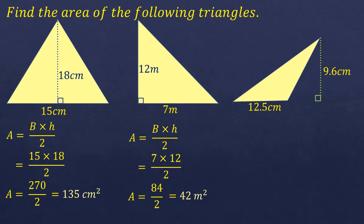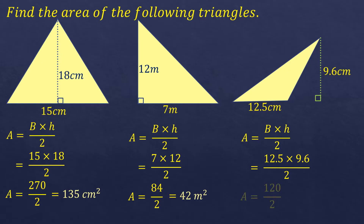Another triangle with a base of 12.5 centimeters and a height of 9.6 centimeters. Following the formula and substituting, 12.5 times 9.6 is 120, divided by 2, it will be 60 square centimeters.